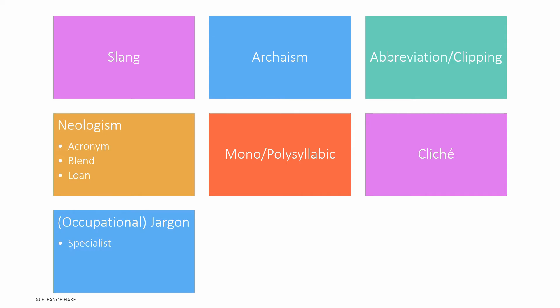Then occupational jargon — these require specialist knowledge, they're kind of buzz words. For example, 'due diligence', 'streamlining the team', or even specialist terms such as 'phospholipid bilayer'. Latinate words come, obviously, from Latin. For example, relinquish, request, conceive, vocation, beneficial. These kinds of words are generally flowery and polysyllabic, and also tend to come with formal texts.